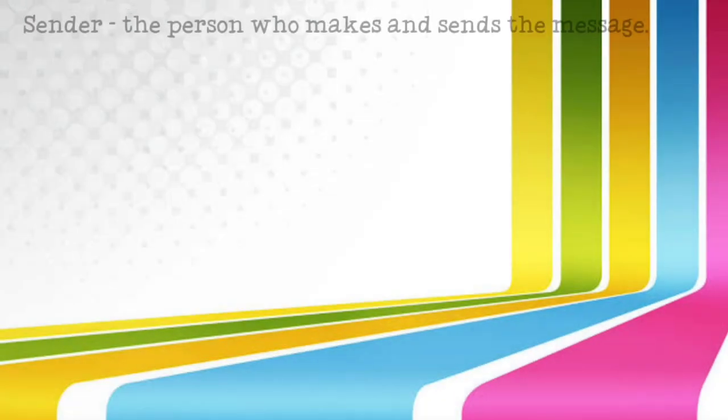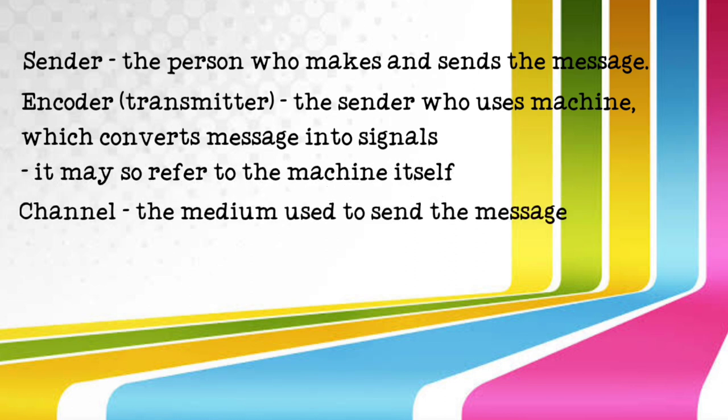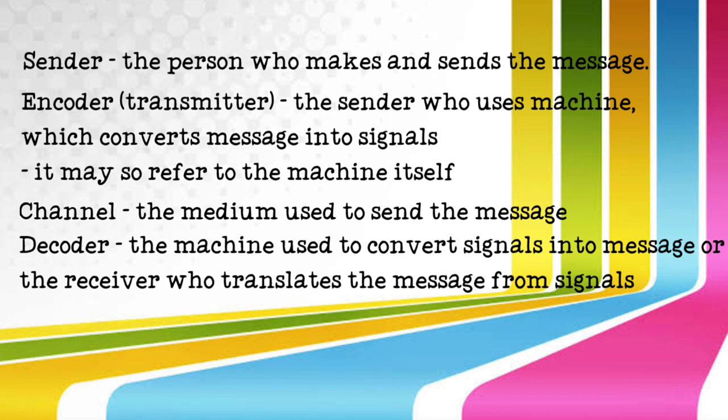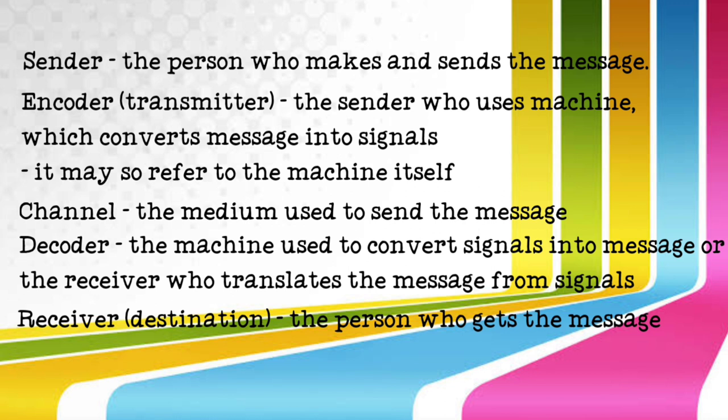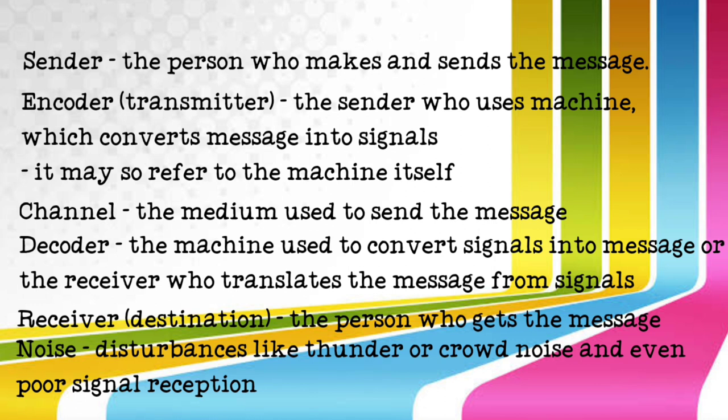This is because you might get yourself confused later as some terms sound like they overlap in meaning, which actually do not. The sender is the person who makes and sends the message. The encoder or the transmitter is the sender who uses a machine which converts message into signals. It might also refer to the machine itself, a reason why it is technological and is otherwise known as the telephone model of communication. The channel is the medium used to send the message. The decoder is the machine used to convert signals into message or the receiver who translates the message from signals. The receiver or destination is the person who gets the message or the place where the message must reach. The noise refers to disturbances like thunder and crowd noise and even poor signal reception which do not let the message get to the receiver as intended or meant.